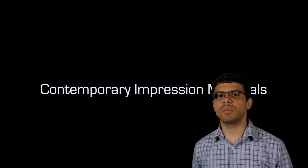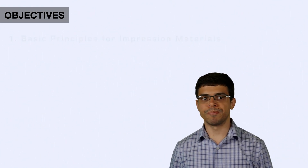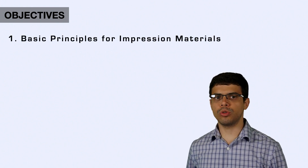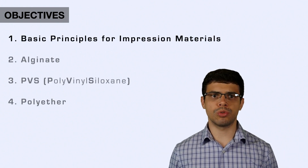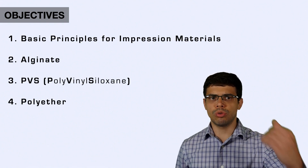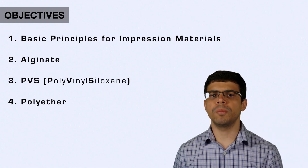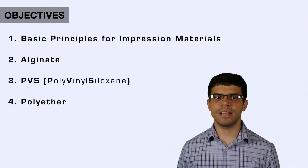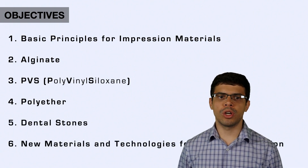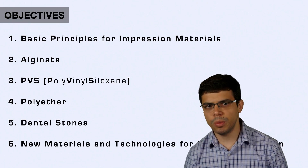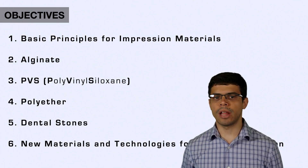We're going to talk about contemporary impression materials today. This is a very comprehensive lecture, so make sure you watch those topics and write things down — you can stop and pause, that's why we're having this recorded. My goal today is to talk about basic principles for impression materials, covering the three most important impression materials nowadays: alginate, PVS, and polyether. Then we're going to talk about dental stones as well and some new materials and technologies for dental impression.